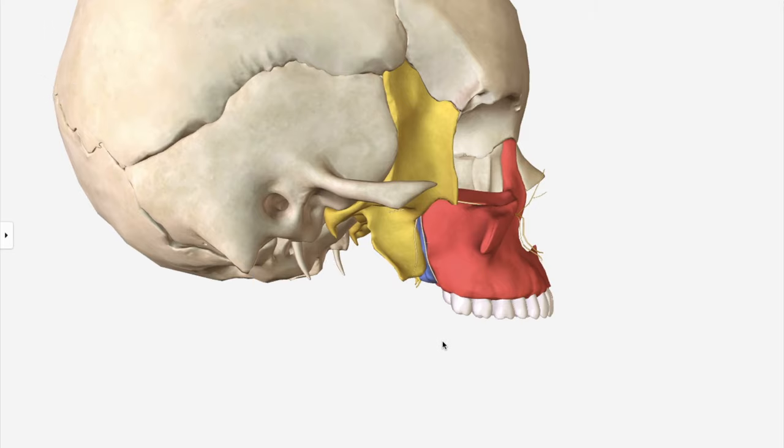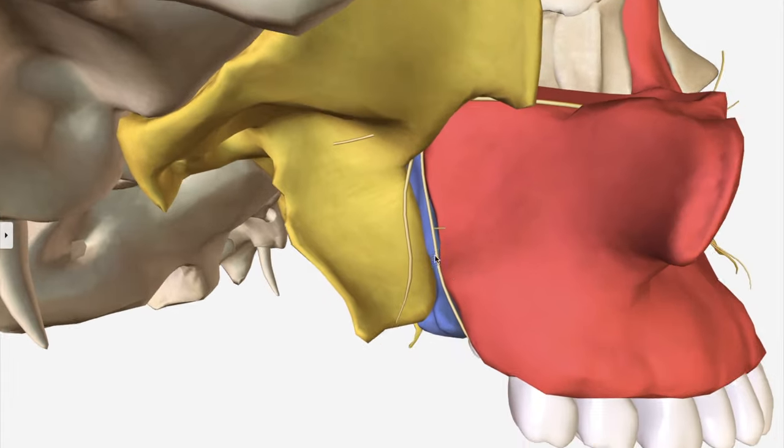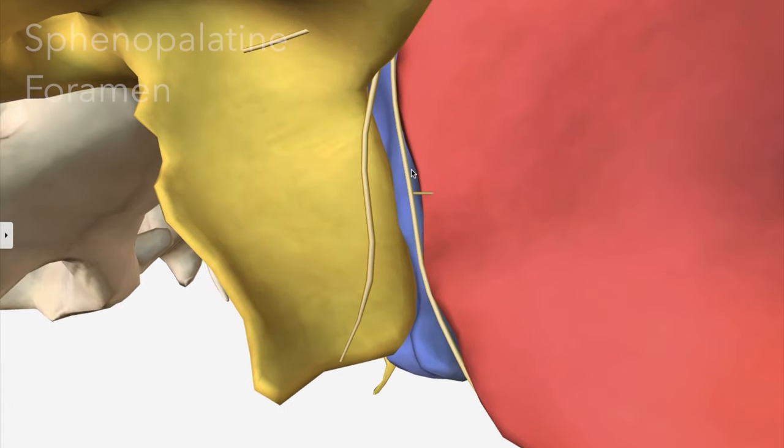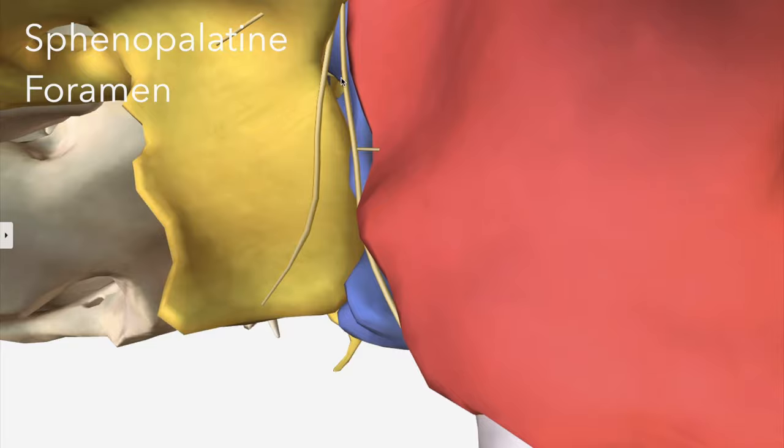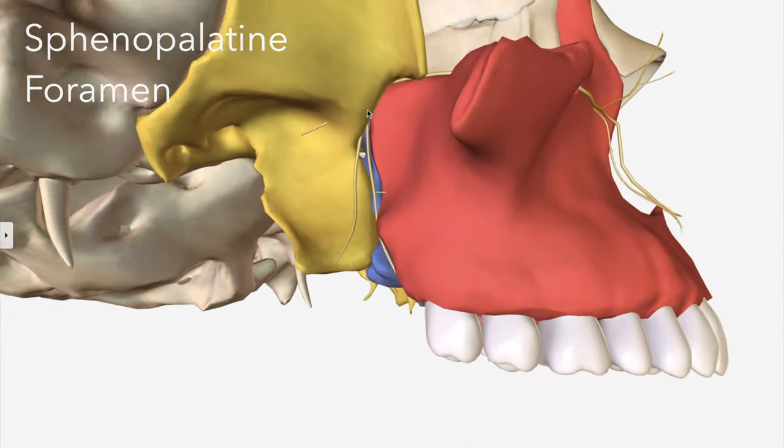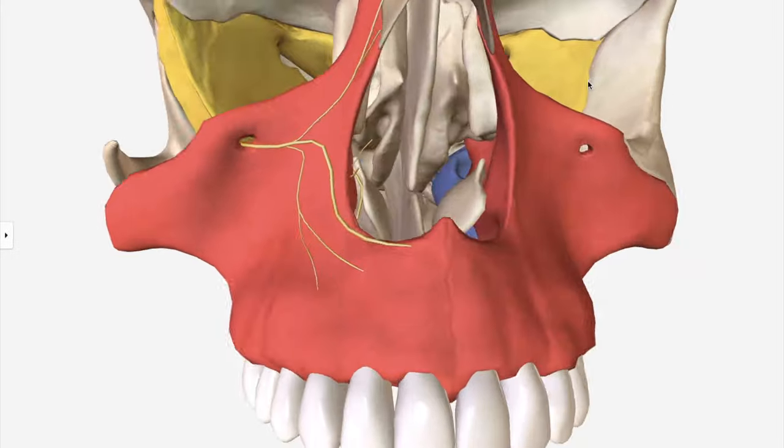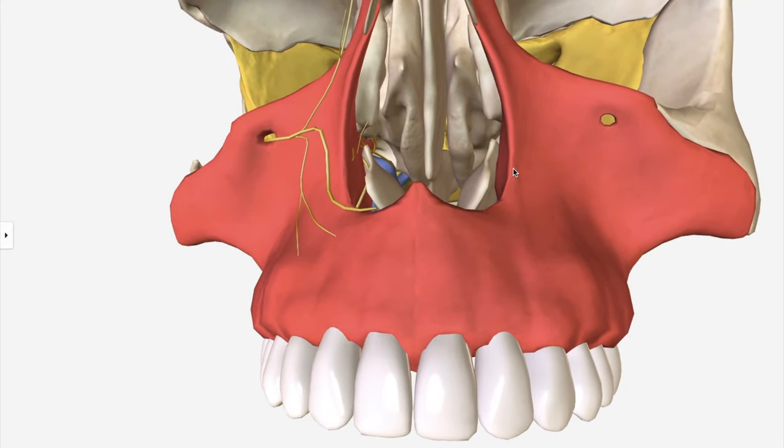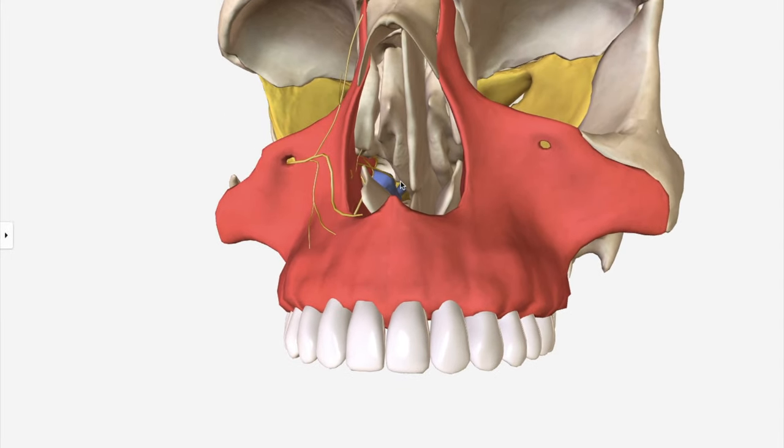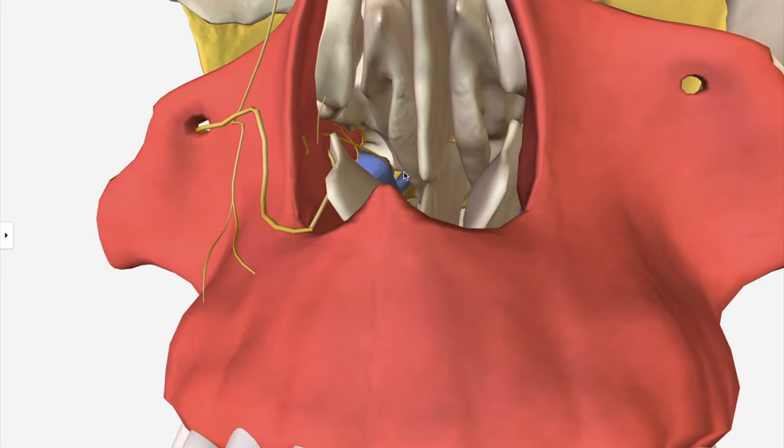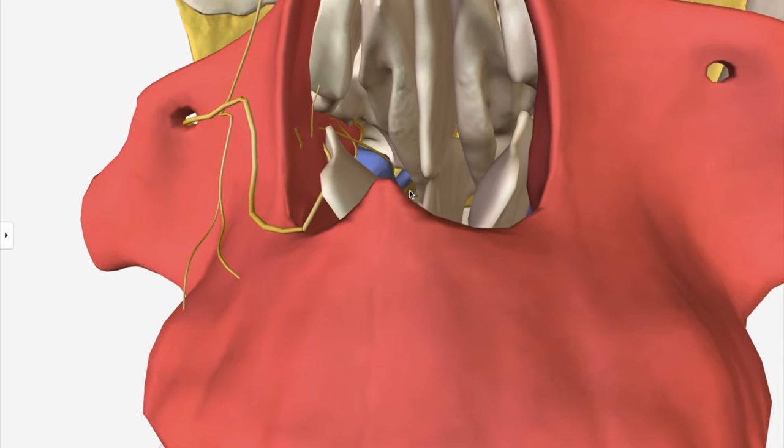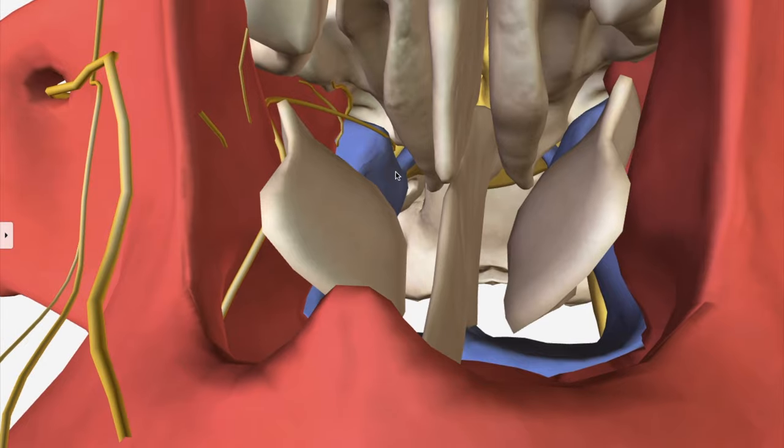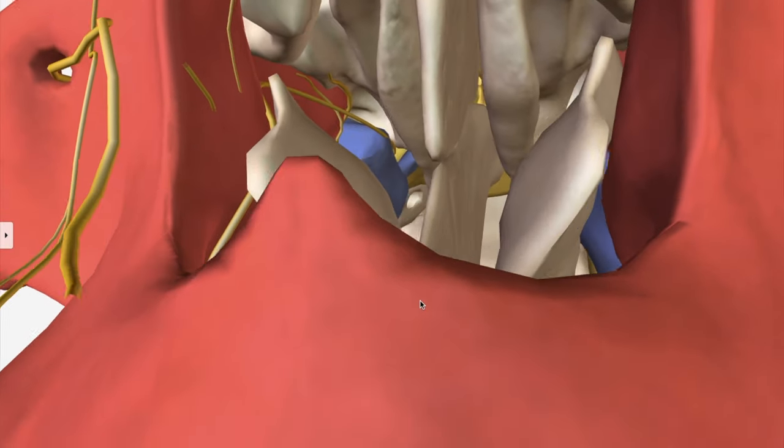Returning now to the pterygomaxillary fissure, through that we can see the sphenopalatine foramen. If we shift around to the nasal cavity now, here is the opening for the sphenopalatine foramen. So this foramen opens into the nasal cavity, and provides passage for the sphenopalatine artery and nerve, as well as the nasopalatine nerve.